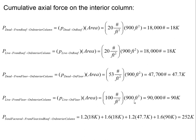The total factored load on the interior column combines dead and live loads with their respective factors: 1.2 times the roof dead load of 18 kips, plus 1.6 times the roof live load of 18 kips, plus 1.2 times the floor dead load of 47.7 kips, plus 1.6 times the floor live load of 90 kips. The result is 252 kips — the axial force that column must safely hold.